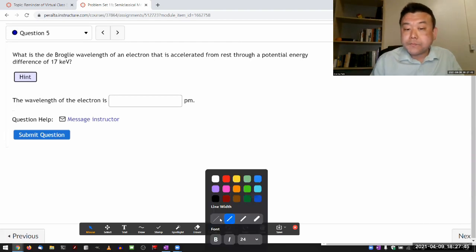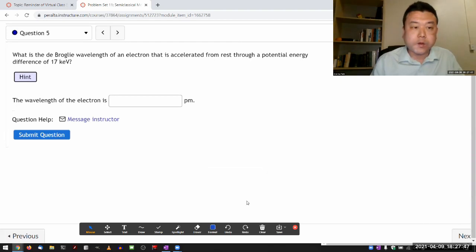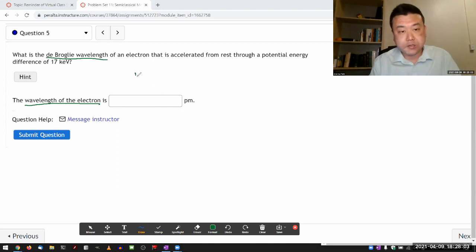So working backward for a question like this, when you are looking for the wavelength of a particle, especially because it's asking for the de Broglie wavelength, the relationship that you are going to use is the de Broglie relationship.